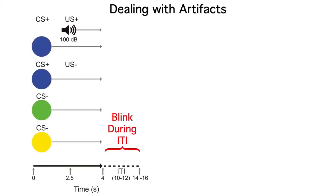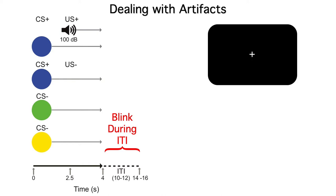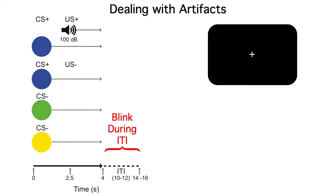ERP researchers have three main methods to deal with artifacts. First, we can try to minimize the occurrence of the artifacts. For example, we might tell our subjects to blink only at certain times, like the intertrial interval or ITI. Or we might tell them to maintain their gaze on a central fixation point and then use an eye tracker to make sure they don't move their eyes.